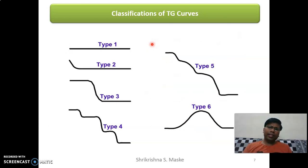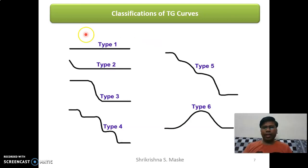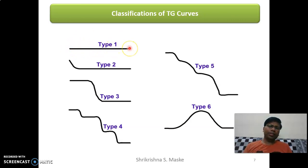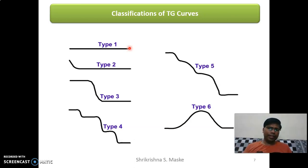This is a classification of thermogravimetric curves. The first type is a straight line, meaning no change in mass is taking place — the mass of the sample remains constant, indicating the sample is thermally stable. The second type shows a reduction, meaning the mass is going to decrease.